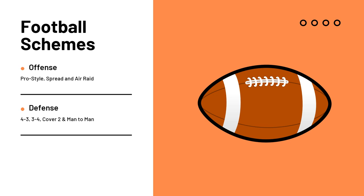Let's start with some offensive football schemes. Pro style offers a balance between running and passing, typically involving a mix of formations including under center and shotgun, and utilizes various personnel groupings. The spread offense spreads the defense horizontally, creates mismatches and space for playmakers, and utilizes shotgun formations with quick passes to exploit open areas. The air raid involves passing the ball very frequently, often utilizing four or five wide receiver sets, emphasizing simplicity in play calling and execution, which can lead to high-tempo scoring drives.